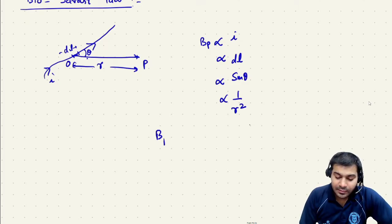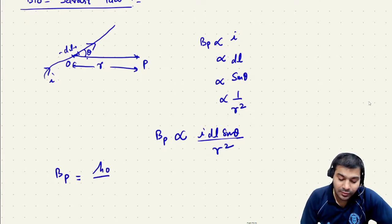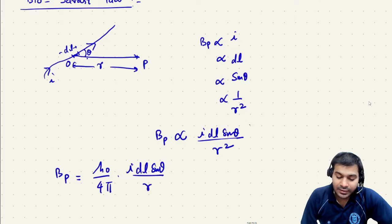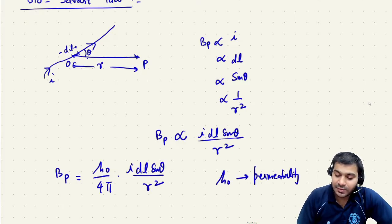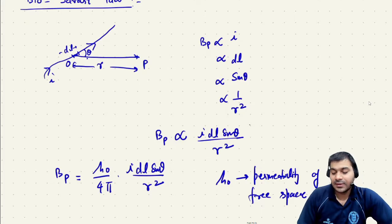If we combine all these, BP is proportional to I·dL·sinθ / r². To remove the proportionality, we introduce a constant μ₀/4π, giving dBP = (μ₀/4π) · I·dL·sinθ / r². Here μ₀ is a constant called the permeability of free space, also called permeability of vacuum.